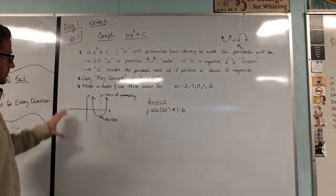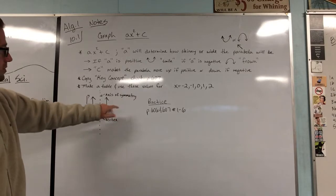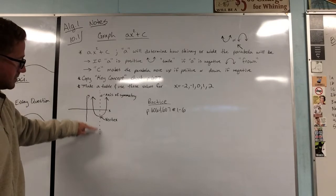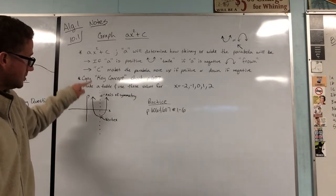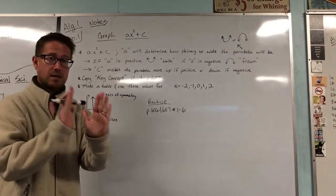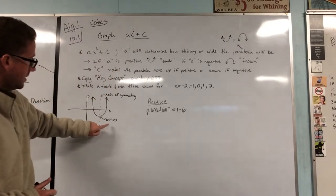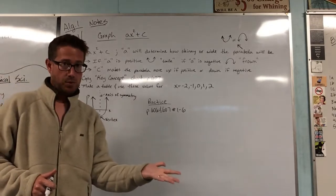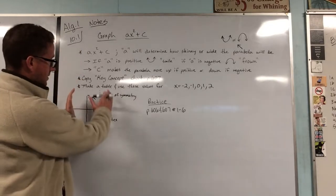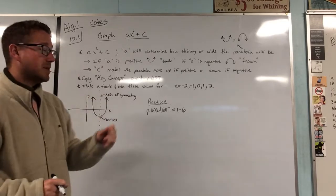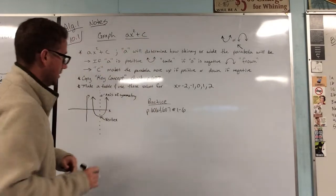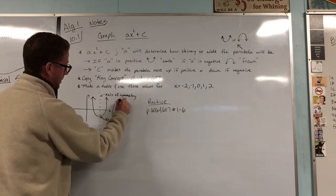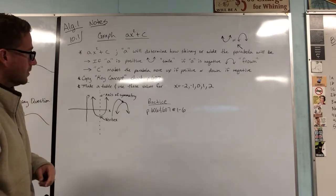Before we do a quick example, I just want to make sure that you guys have a couple terms here. The axis of symmetry, that would be the line that cuts a parabola perfectly in half, so essentially symmetry, getting two equal sides. And then the vertex, that's another key term. The vertex is going to be either the very lowest point when you have a smiley face parabola, or it's going to be the very highest point when you have a frown face parabola. So the vertex would be right there.